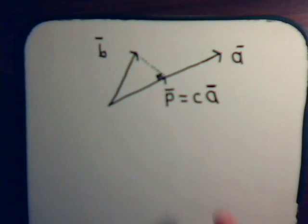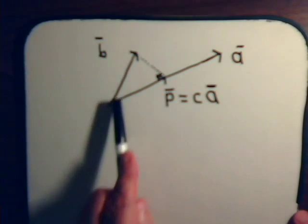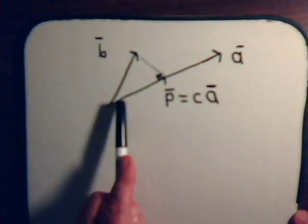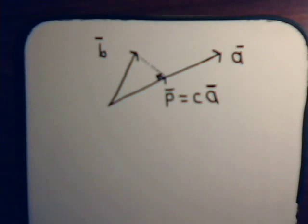Now what's the magnitude of this scalar? Well, we could say it would just be the magnitude of B times the cosine of this angle. Here we want to answer that same question from a vector point of view.